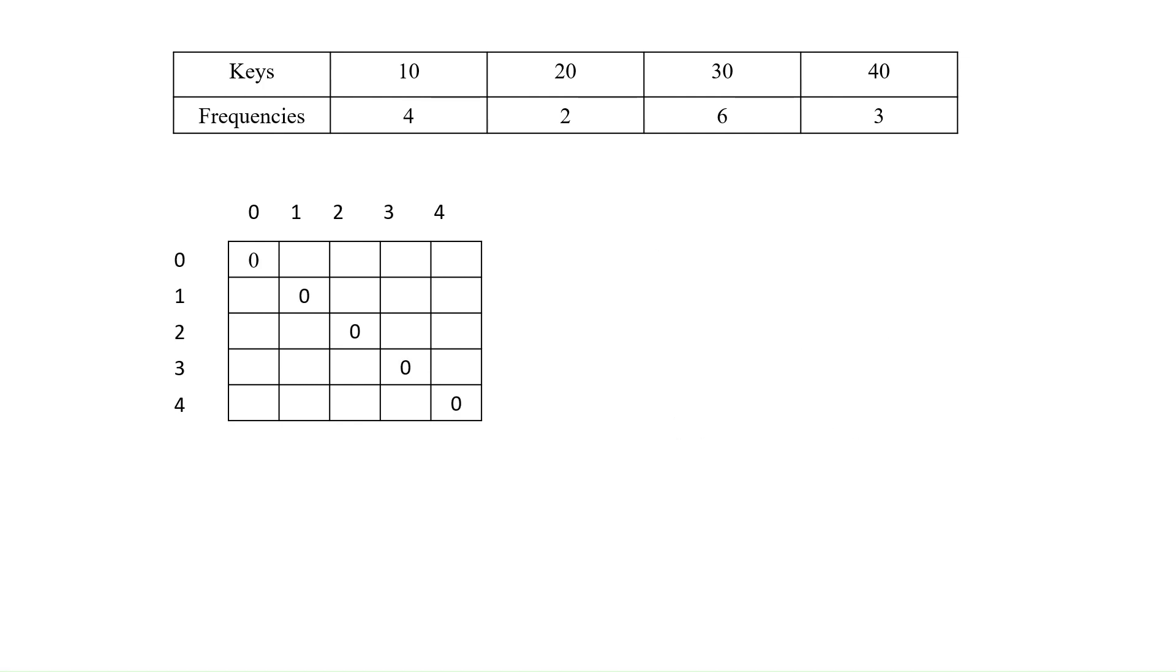Now, we have to find the length L is equal to 1 such that J minus I is equal to 1 and L is equal to 1 indicates that we have to consider single key value and the satisfying index positions are 0, 1 where we have to consider for first key that is 0. Since we are searching for single key, the maximum frequency for searching that key 10 is 1 into 4 is equal to 4.